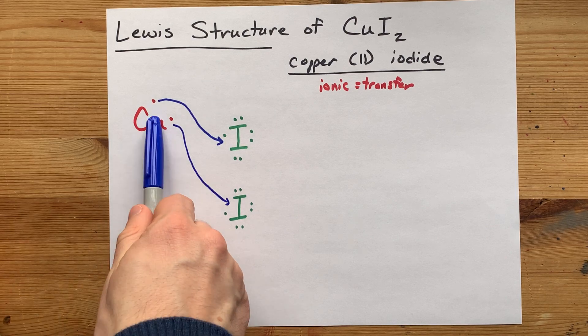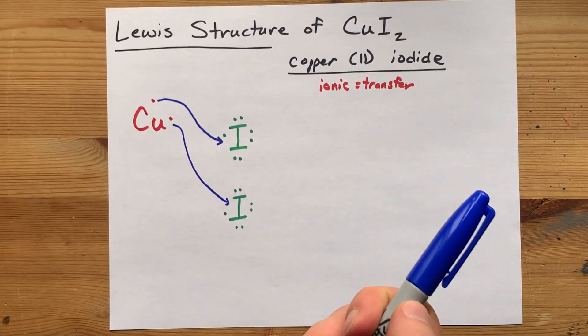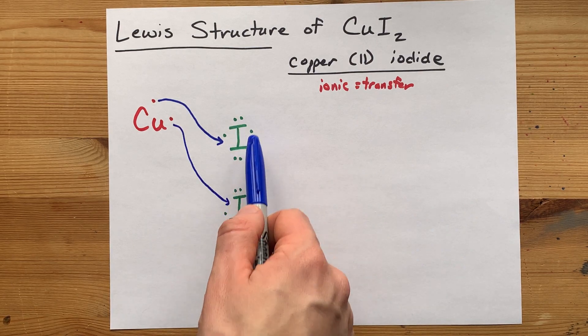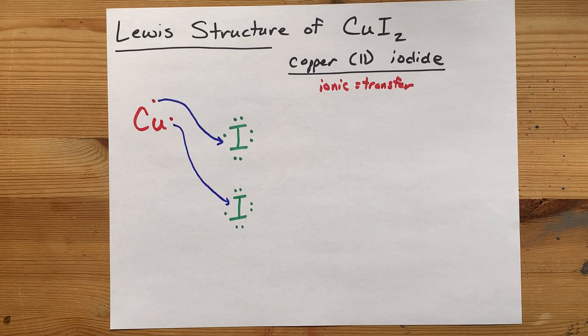Now I've got my copper having given away all its electrons, like metals do, and the iodines completing their octets to give a full outer shell of eight.